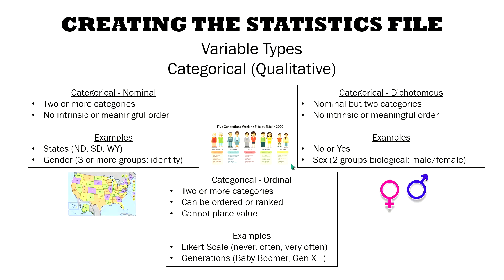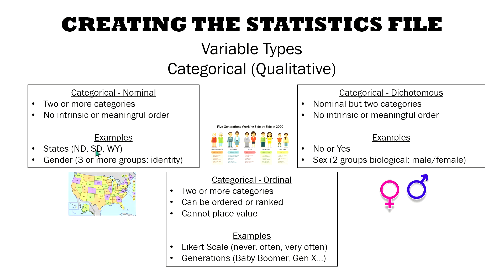Moving along, when you look at categorical variables, which are also considered to be qualitative versus quantitative — some will describe it that way. Categorical variables can be nominal, which means there are two or more categories with no intrinsic or meaningful order to them. So states would be nominal categories — North Dakota, South Dakota, Wyoming — there's no necessarily meaningful order there. Gender is the same thing; you can have three or more groups with no specific order.